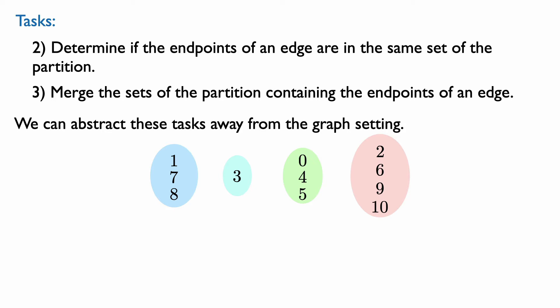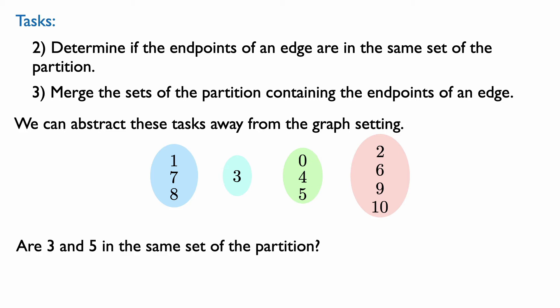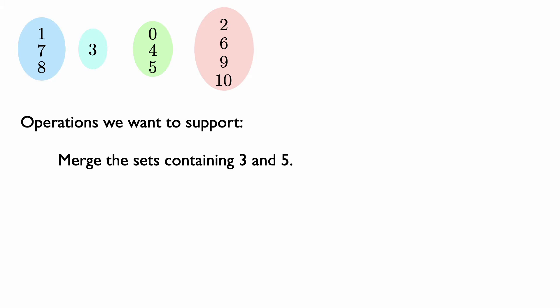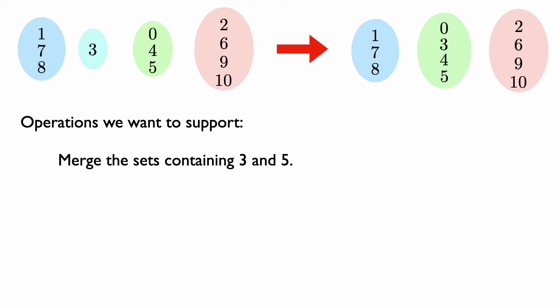Given two numbers, we want to tell if they are in the same set of the partition, and we want to merge the sets of the partition containing two given numbers. In our application, these two numbers will be the endpoints of an edge. For example, we want to answer: are 3 and 5 in the same set of the partition? In this case, the answer is no. And the other operation merges the sets containing 3 and 5, resulting in a green set with elements 0, 3, 4, and 5.